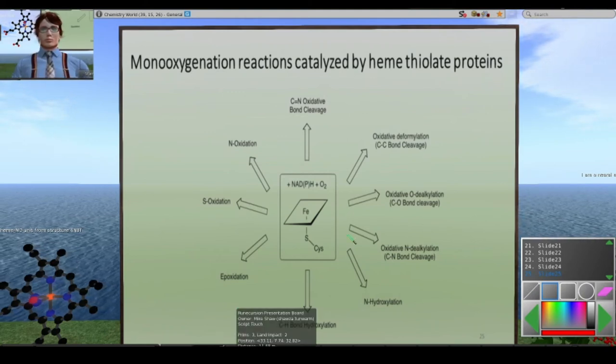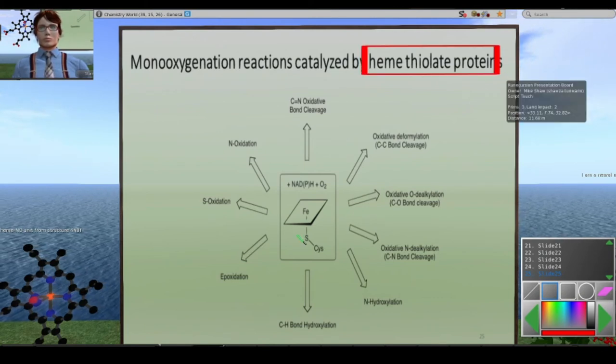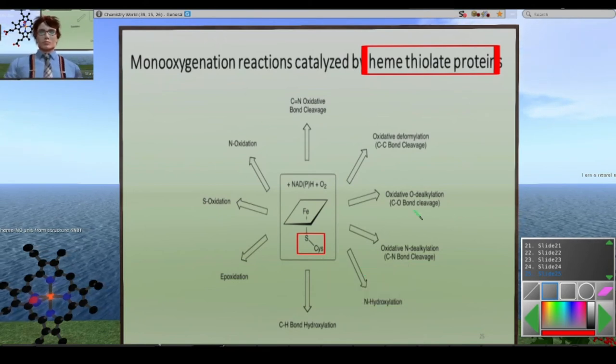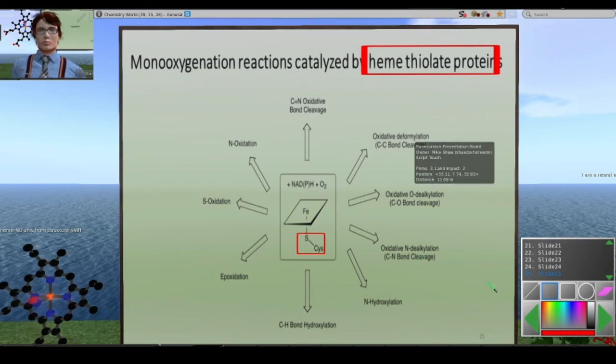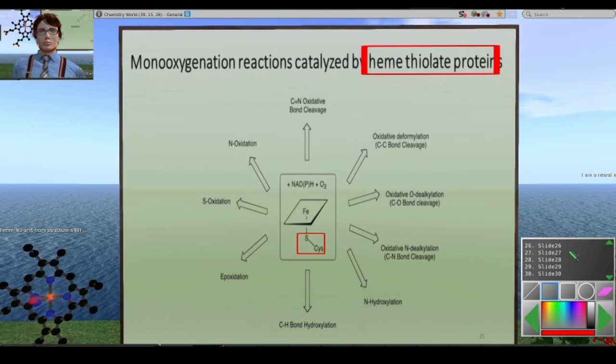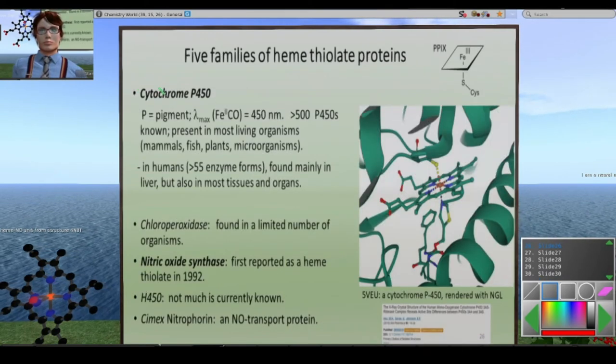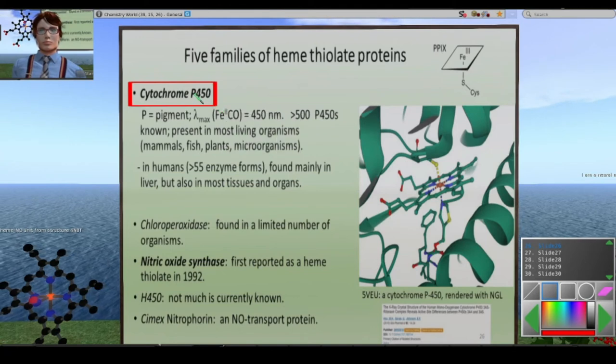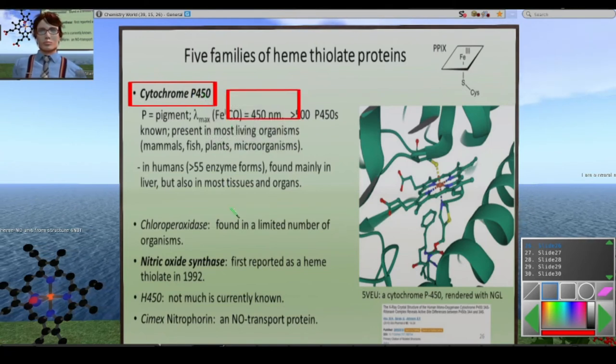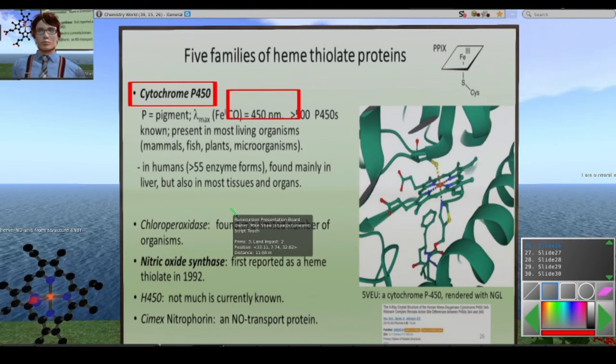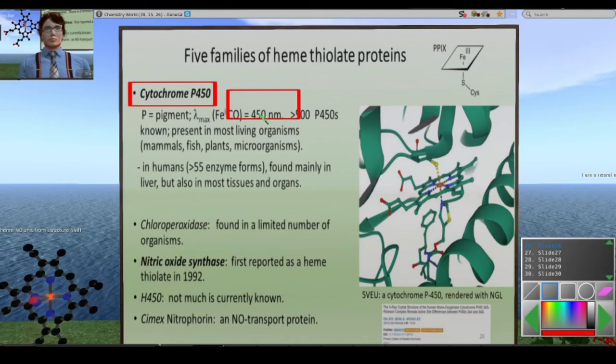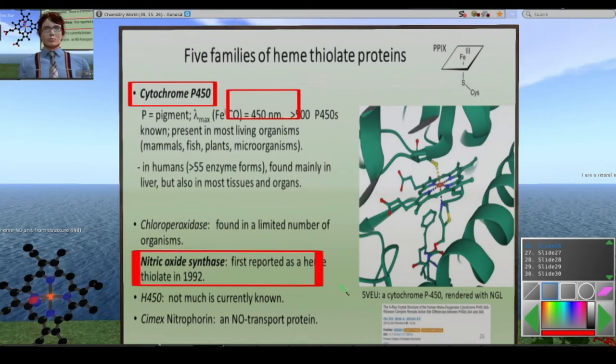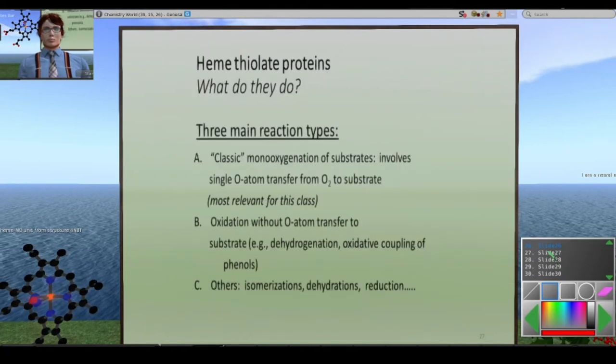Moving on to some other examples, heme thiolate proteins. I mentioned cysteine in the proximal site. Heme thiolate proteins are incredibly important. They do a variety of things, both in the body and commercially.